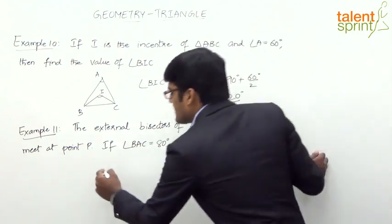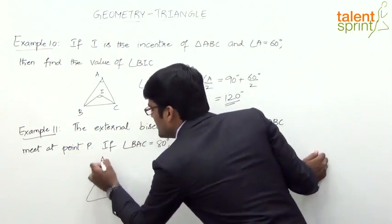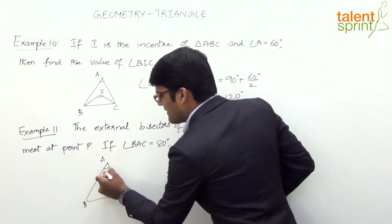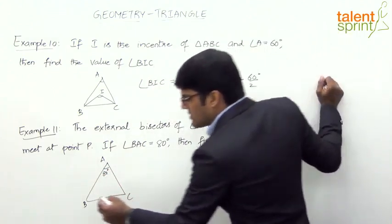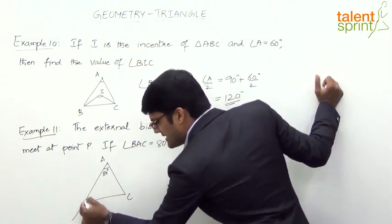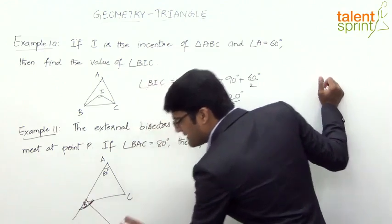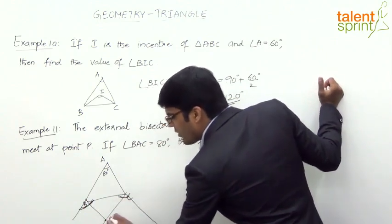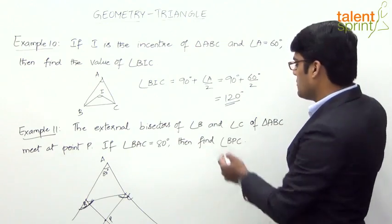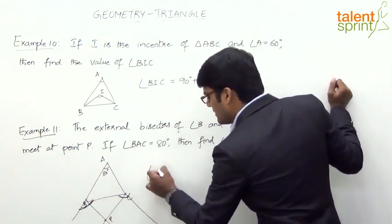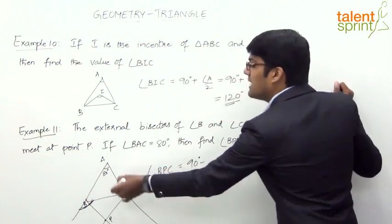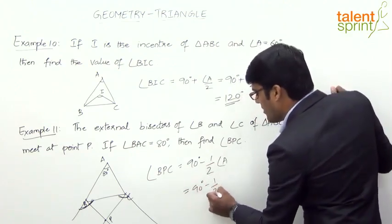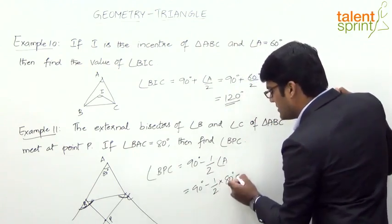Let's consider the diagram for clarity. Let ABC be the triangle with angle BAC = 80 degrees, which is angle A. The external bisectors of angle B and angle C are drawn by extending lines AB and AC respectively. These two external bisectors meet at point P. Angle BPC = 90 degrees minus half the vertical angle A, which gives 90 − (80/2) = 90 − 40 = 50 degrees.